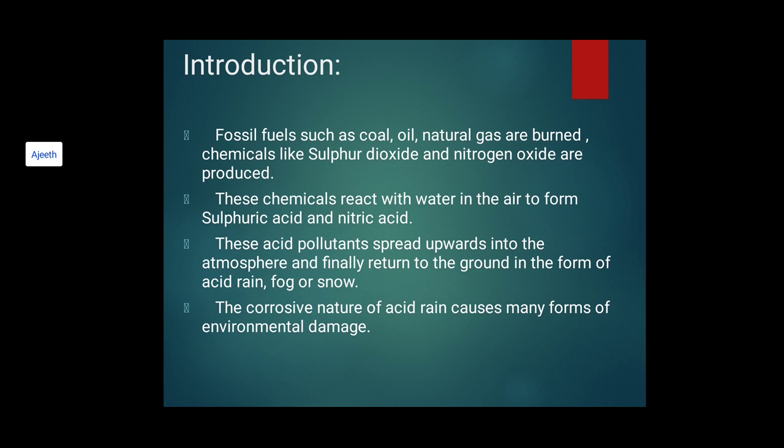In the introduction to acid rain: fossil fuels such as coal, oil, and natural gas are burned, and chemicals like sulfur dioxide and nitrogen oxide are produced. Combustion of fossil fuels is harmful but continues because it is easy to do. These chemicals react with water in the air to form sulfuric acid and nitric acid. When there is rainfall, these toxic gases mix with water and form acid rain.